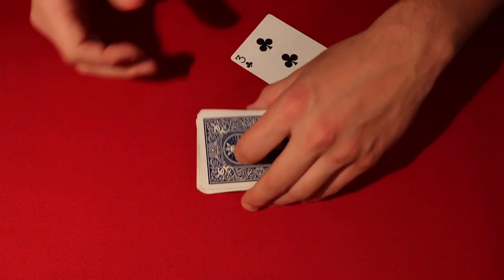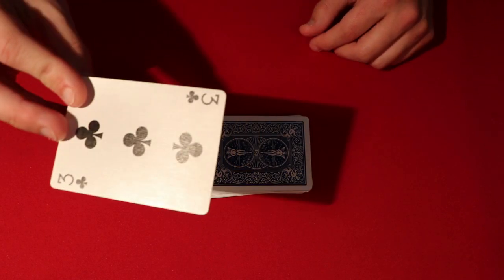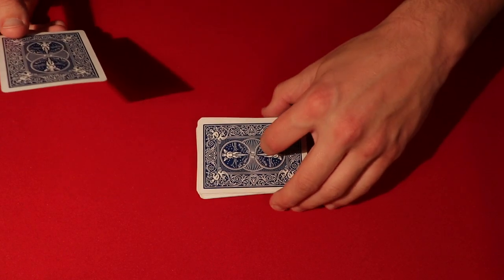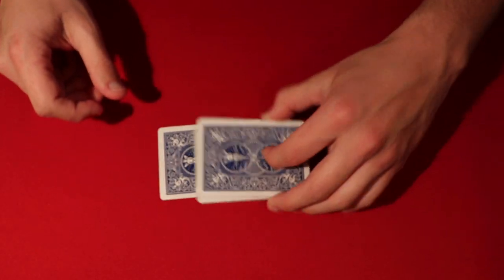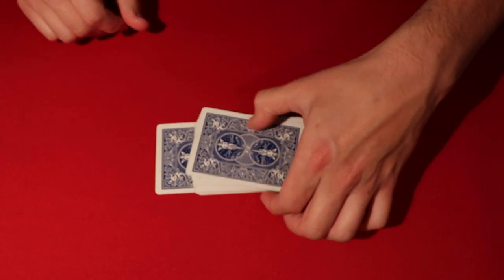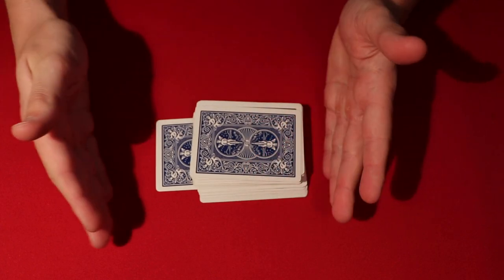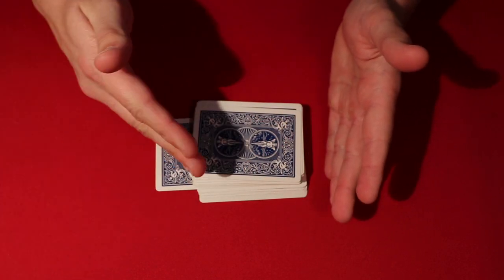So you square up the deck, and all you have to do is when you take their card, in this case, the three of clubs, you open up the deck with one hand, put their card kind of out-jogged like this. So from the top, it looks like that. It's just kind of out-jogged.